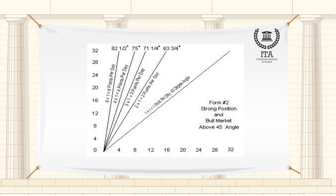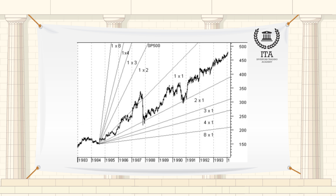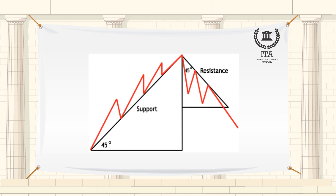Gann Angles believes that there is an ideal balance between time and price which exists when prices move identically to time, which occurs when the Gann Angle is at 45 degrees. In total, there are nine different Gann Angles that are important for identifying trend lines and market actions. When one of these trend lines is broken, the following angle would provide support or resistance.